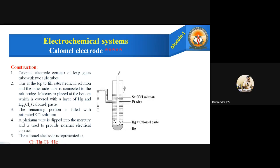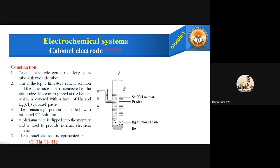Looking at the diagram: this is a long glass tube. One side tube on the right is used to fill the saturated KCl solution; the side tube on the left is used to connect this electrode to the salt bridge. At the bottom is mercury, covered with a second layer of mercury and mercurous chloride — the calomel paste. A platinum wire dipped into the mercury serves as the external connection.